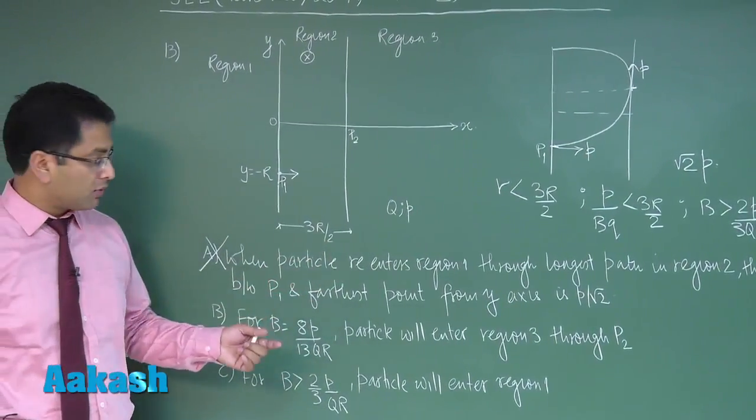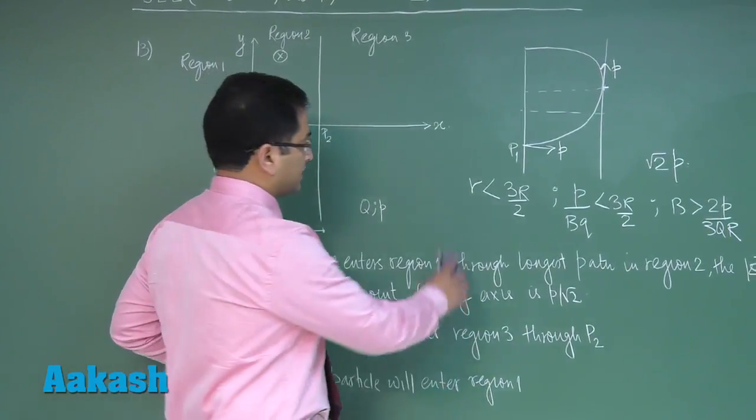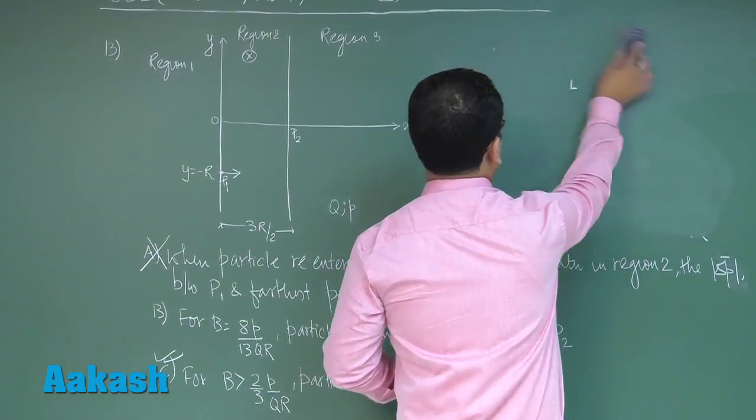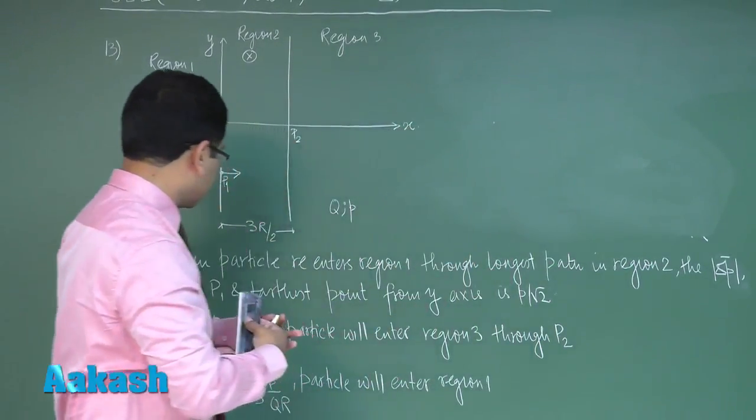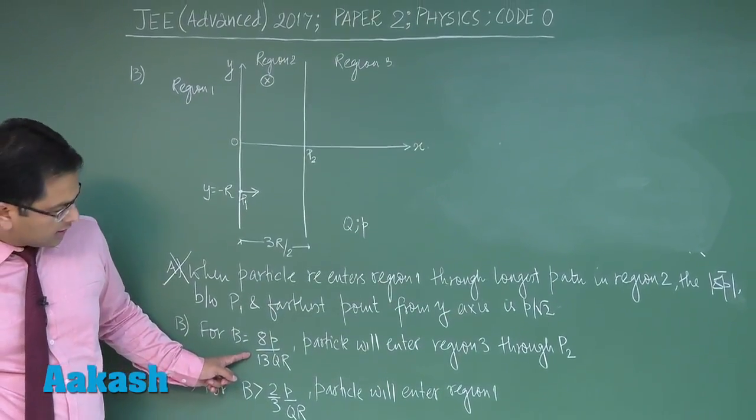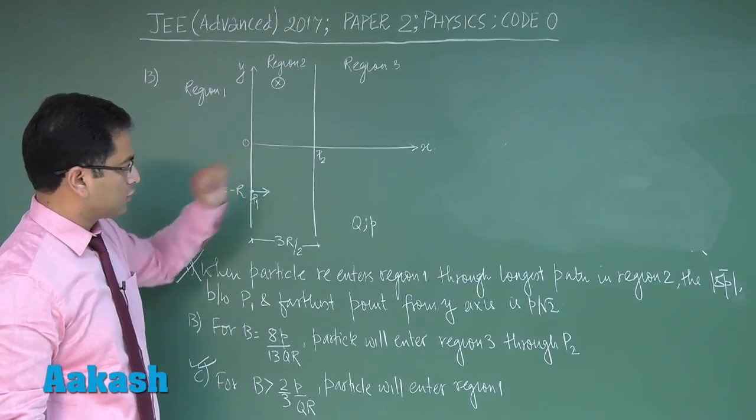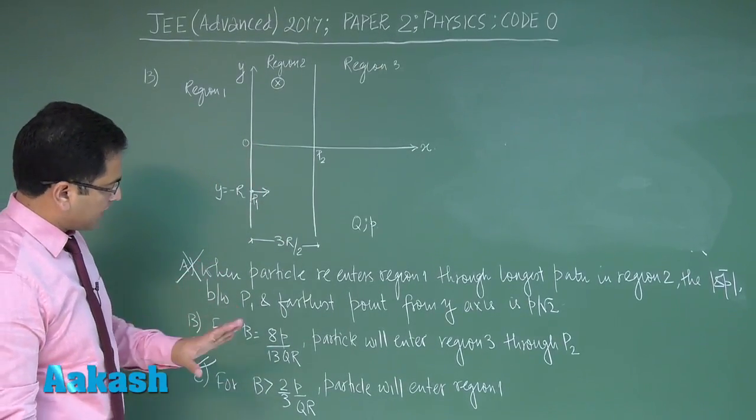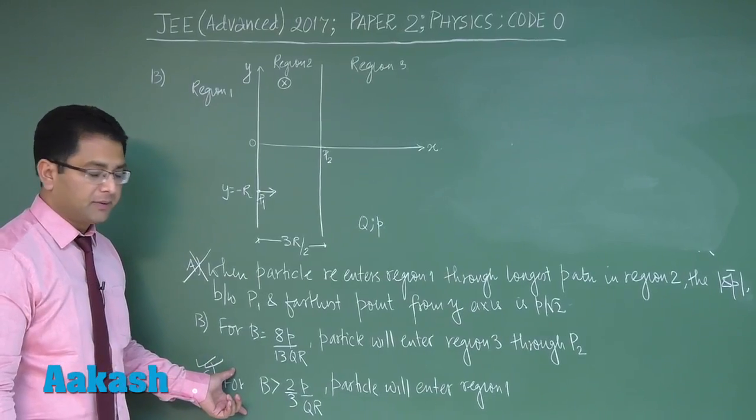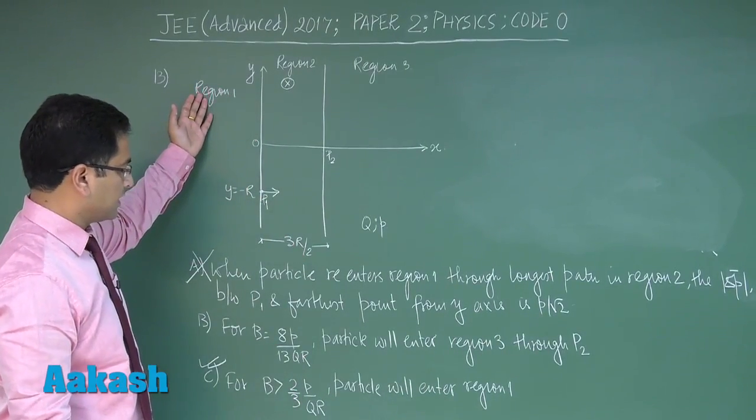Now let's test the validity of option number b. What it says is for this value of B the particle will enter region 3 through p2. It's very simple because we have already gone with c. For B greater than this it would enter region number 1.